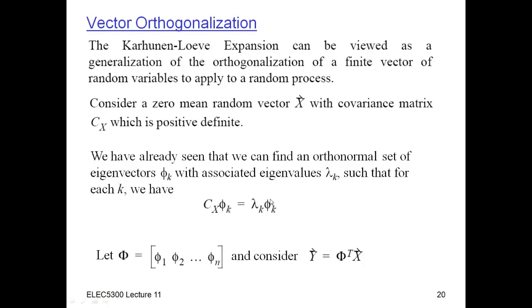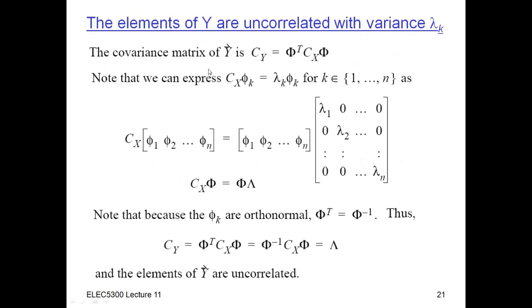If we have n eigenvectors, we can put them all into one big matrix Φ where each column is one eigenvector. Now suppose we take X and apply this linear transformation — this is an n-by-n matrix, going from n variables to n variables. For the resulting random variables Y, since it's a linear transformation, we can get the covariance matrix of Y by taking the covariance matrix of X and pre- and post-multiplying by Φ and Φ transpose.